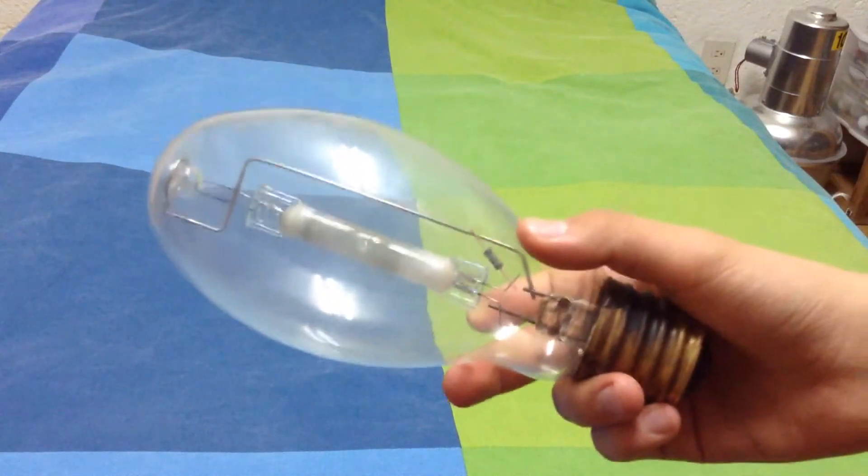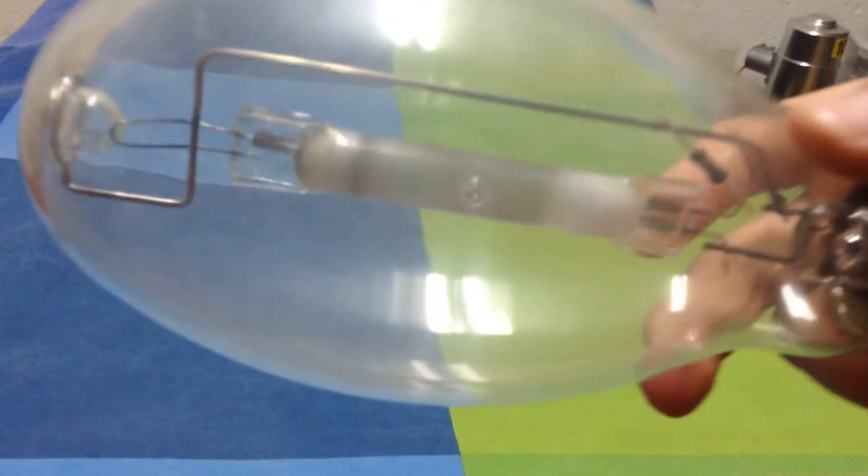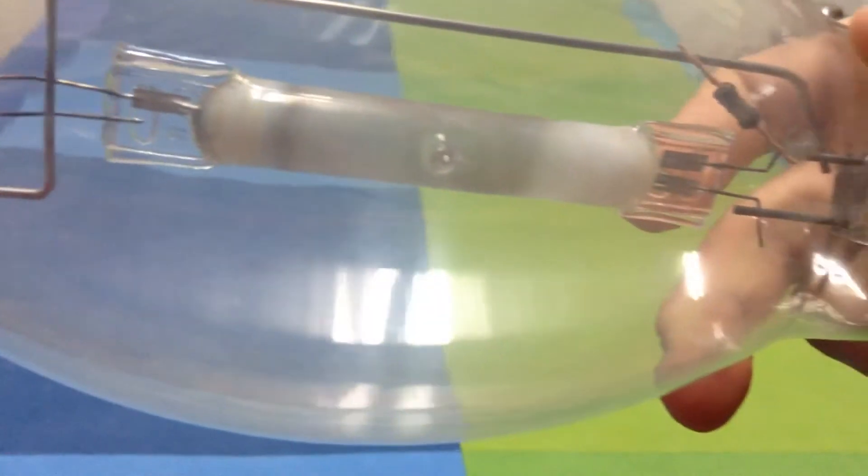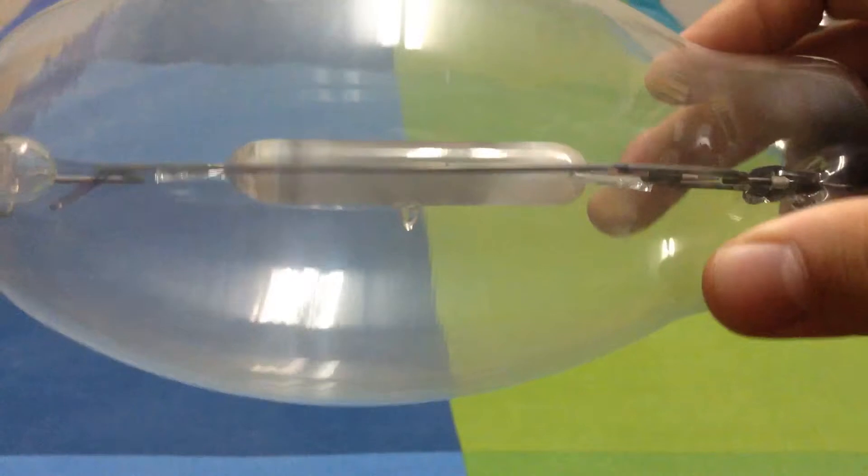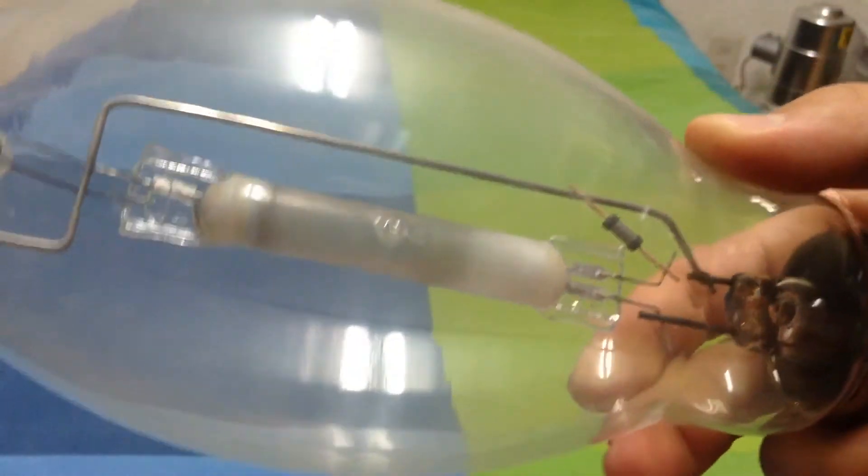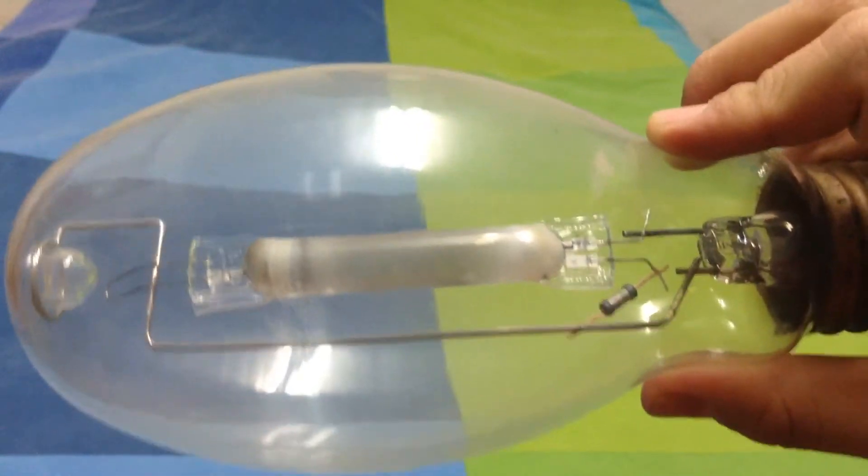Now, as you can see, this is a really, really old bulb. You can see the arc tube turning white because it's reaching the end of its life.